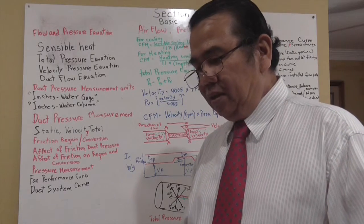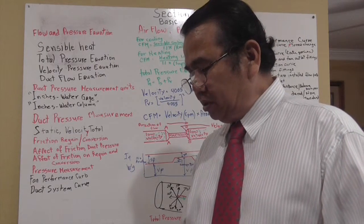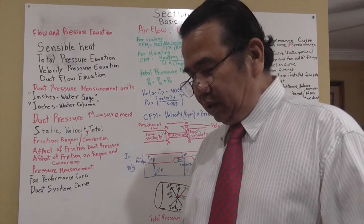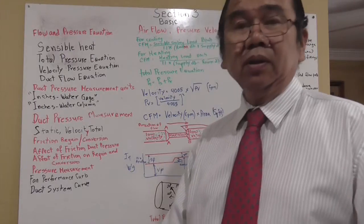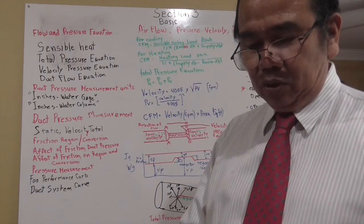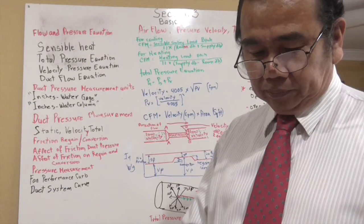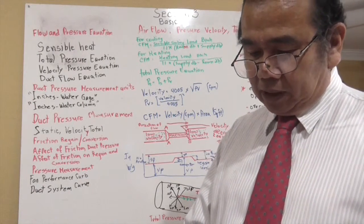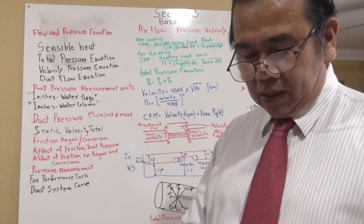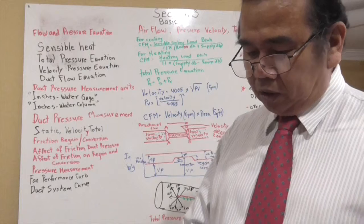Hydraulic diameter equals four times the cross-sectional area divided by the perimeter. The hydraulic diameter concept is useful for estimating the friction for ducts that have an unusual shape. This can be accomplished by calculating the area of a non-round duct, calculating the velocity, and then calculating the hydraulic diameter of the non-round duct.